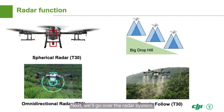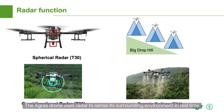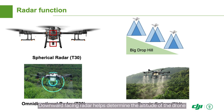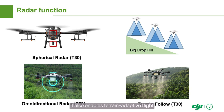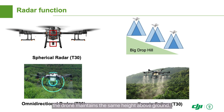Next, we'll go over the radar system. The Agris drone uses radar to sense its surrounding environment in real-time. This enables forward and backward obstacle perception and avoidance. Downward-facing radar helps determine the altitude of the drone for auxiliary height determination. It also enables terrain-adaptive flight, so even if the terrain changes, the drone maintains the same height above ground.